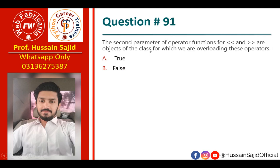The second parameter of the operator function for `<<` and `>>` operators are objects of the class for which we are overloading these operators.